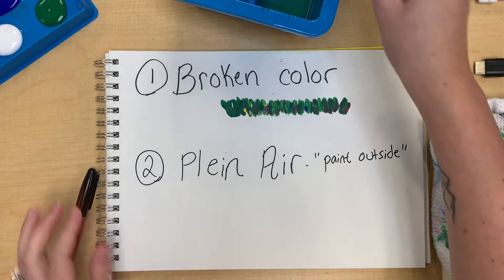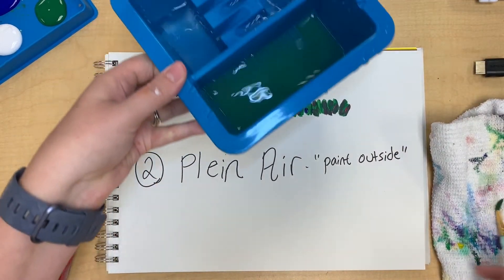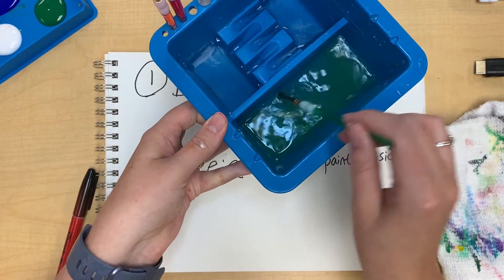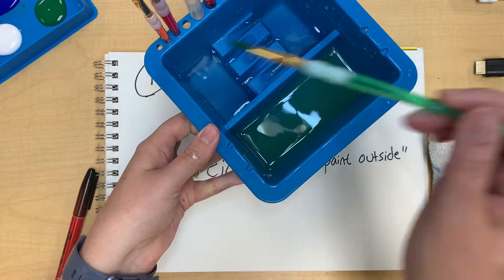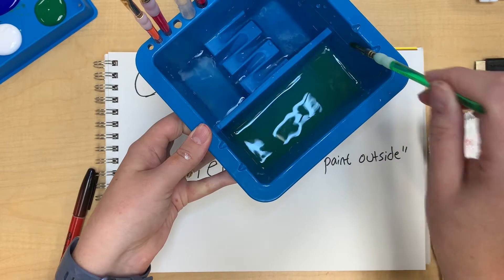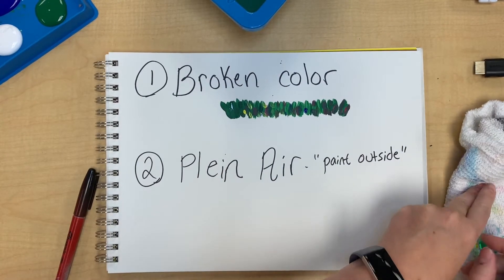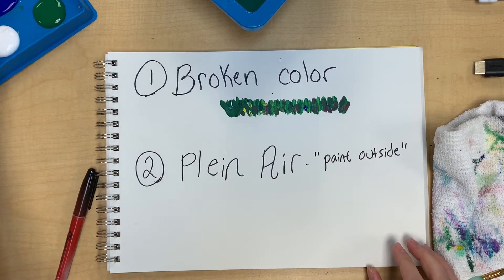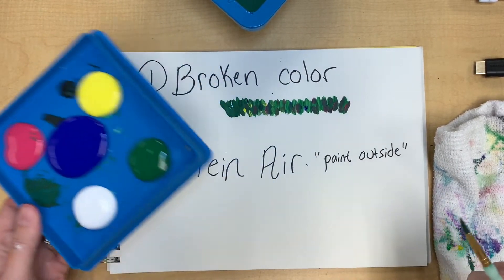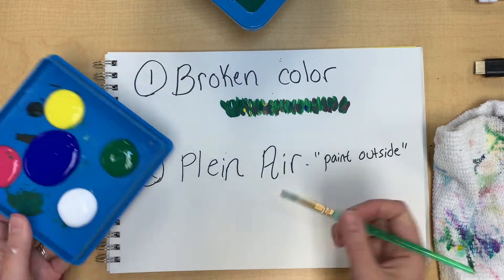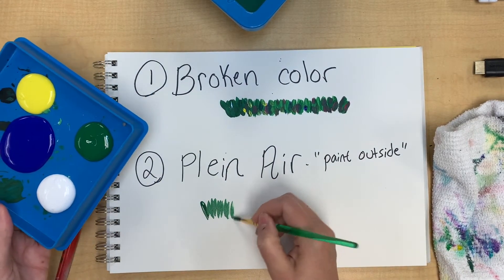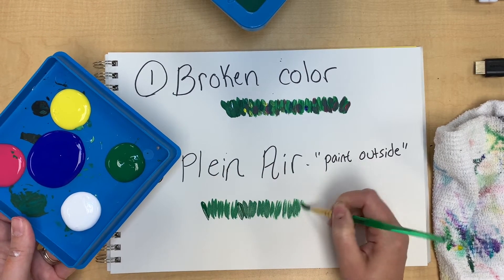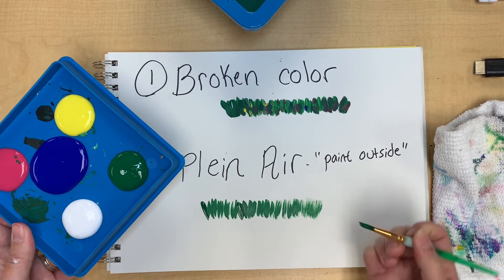When using acrylic in general, every time you clean your brush, make sure it is dry before you dip it into the paint. Acrylic does not take a whole lot of water — you don't want to make your colors too liquidy. I'm going to paint my green again, sticking with the grass theme, since impressionists were known for wanting to paint outside.